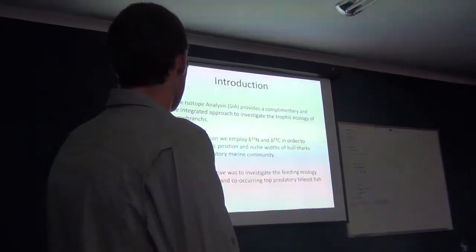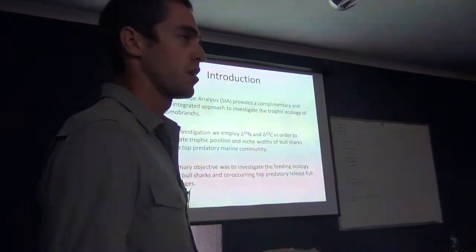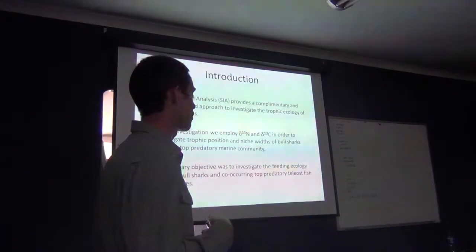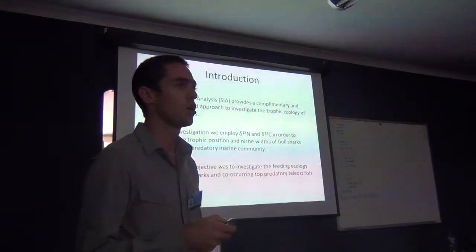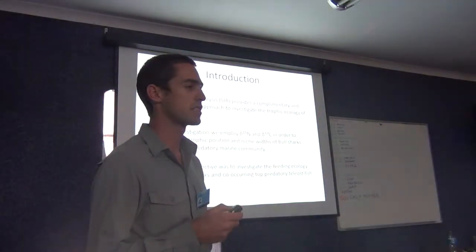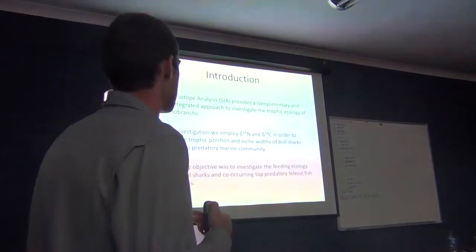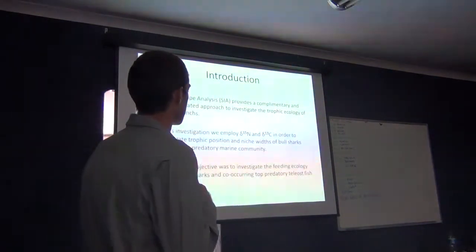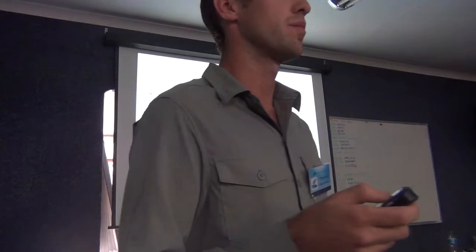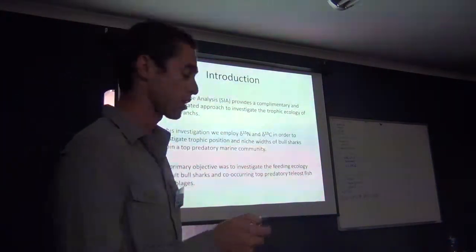We use carbon and nitrogen stable isotopes. To recap: the nitrogen isotope gives us an idea of trophic level, and the carbon isotope gives us an idea of dietary sources. It gives us an idea of assimilated dietary items over time, as opposed to the snapshot nature you may obtain from stomach content analysis.